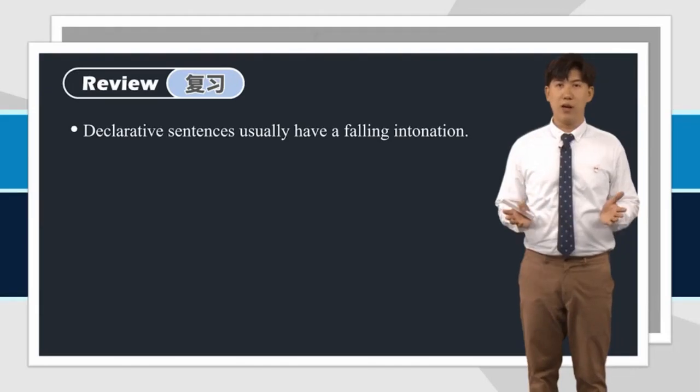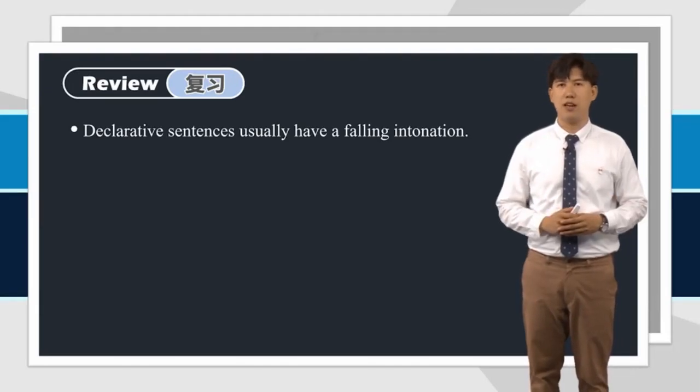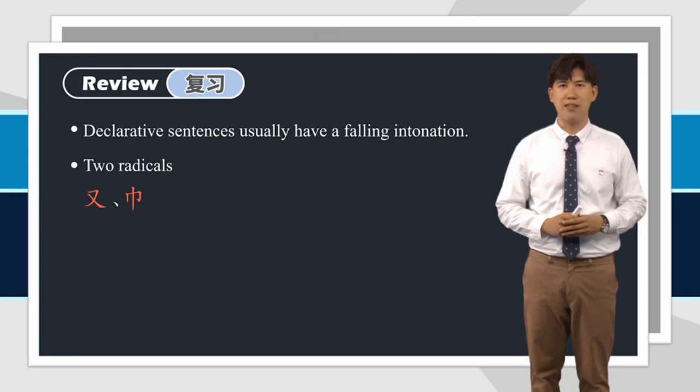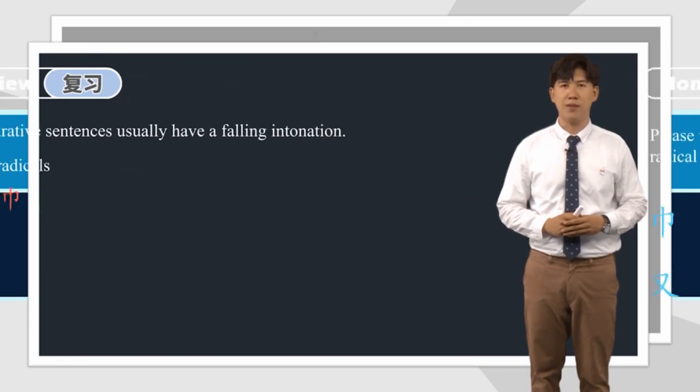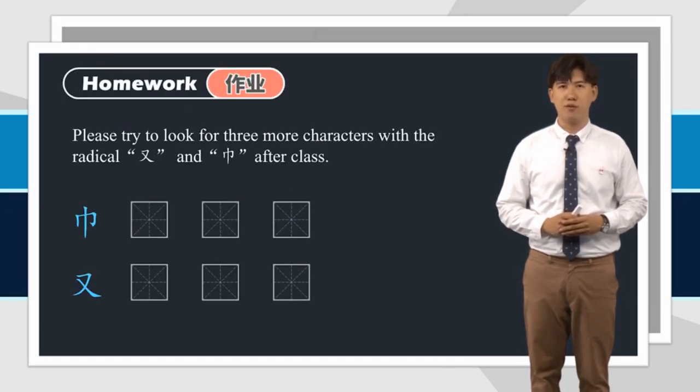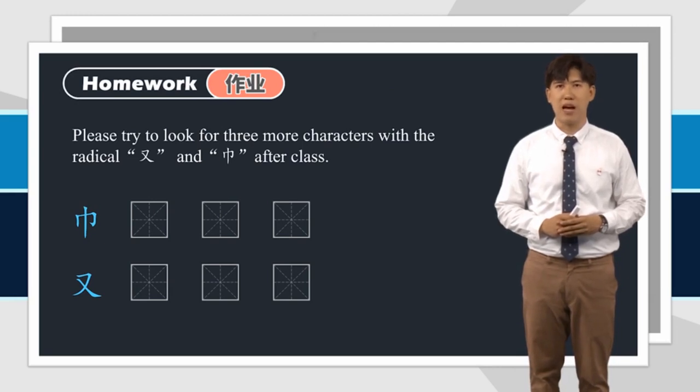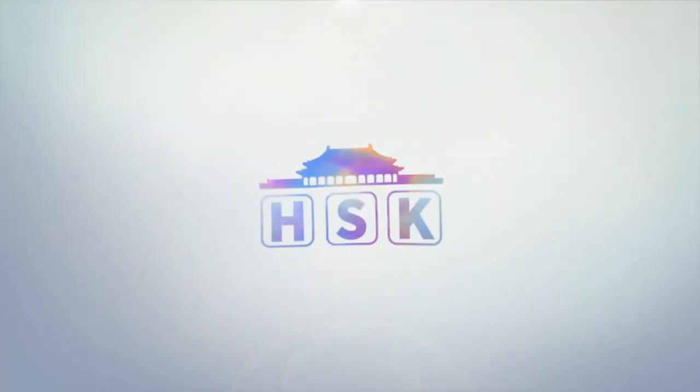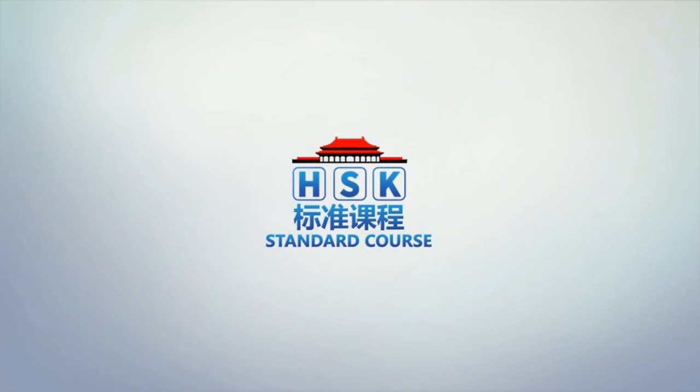Today we have learned how to read declarative sentences in correct intonation and two Chinese radicals: 右字旁 and 巾字旁. Please try to look for three more characters with the radicals 右字旁 and 巾字旁 after class. That's all for Lesson 8. 再见. Bye.